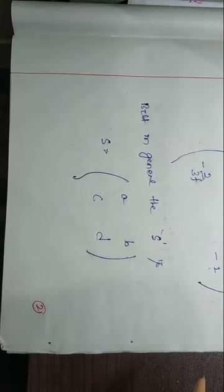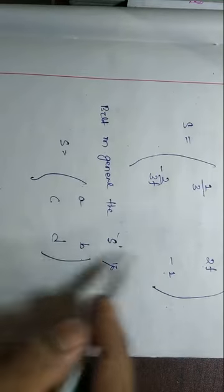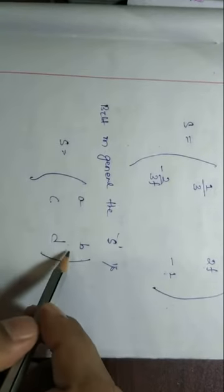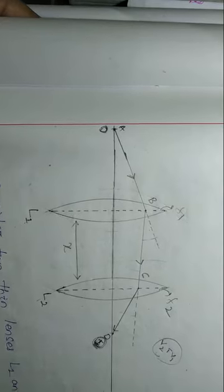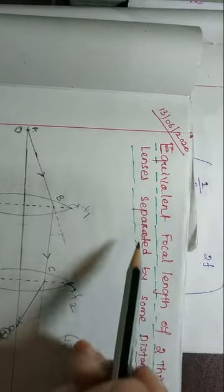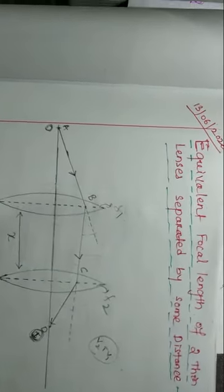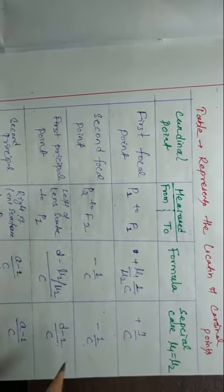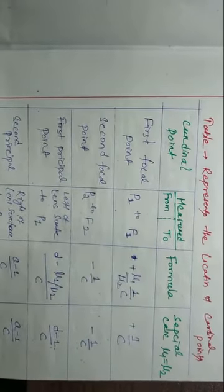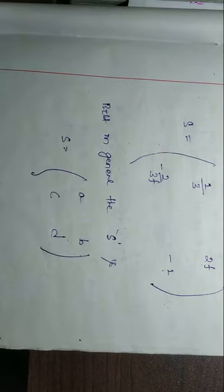In general, the system matrix is written as [A, B; C, D]. By comparing with this general form, we can find the exact values of the cardinal points using the table I provided earlier during the discussion of equivalent focal length of two thin lenses separated by some distance — that table contains all the cardinal point formulas.